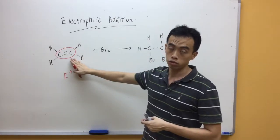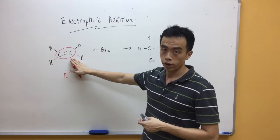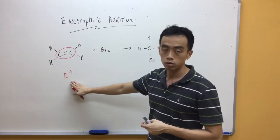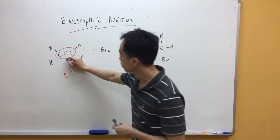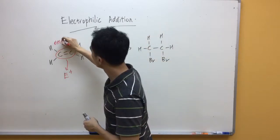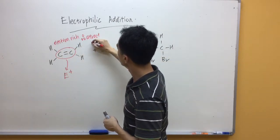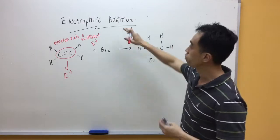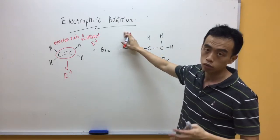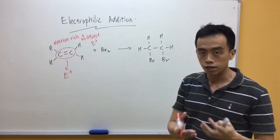This is an electron-rich region, it attracts the electrophile which is electron-prone. Now, how about addition reaction? How come alkynes undergo addition reaction? This idea is pretty simple.